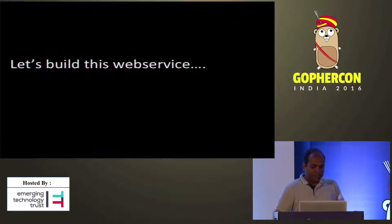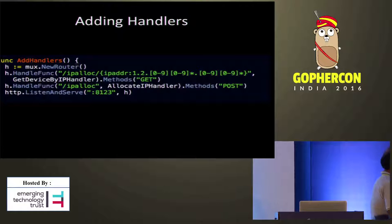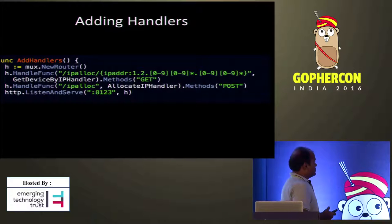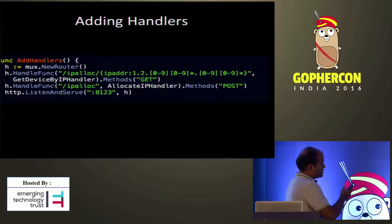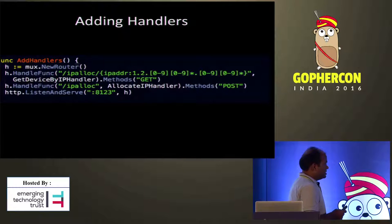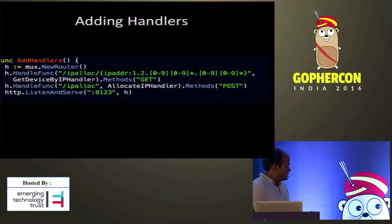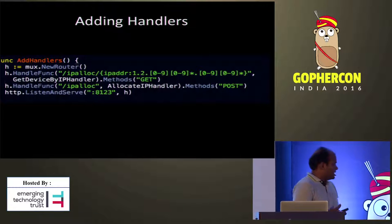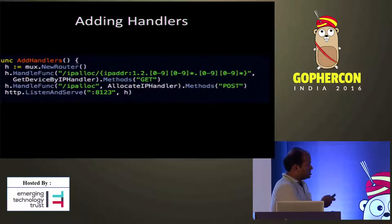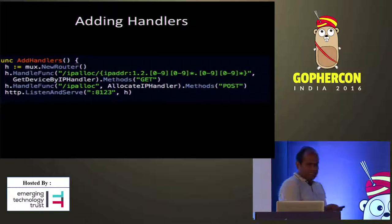I will just show some snippets. Let's build this service. First, we need to add the handler — it adds the routes and the handlers. You just need to define the route. In this case, the IP alloc pattern expects every IP address to start with 1.2. followed by two numbers. This is the handler — GetDeviceByIPHandler. I am restricting it to accept only GET methods. Similarly, for the POST method, that's where new IP addresses can be added.